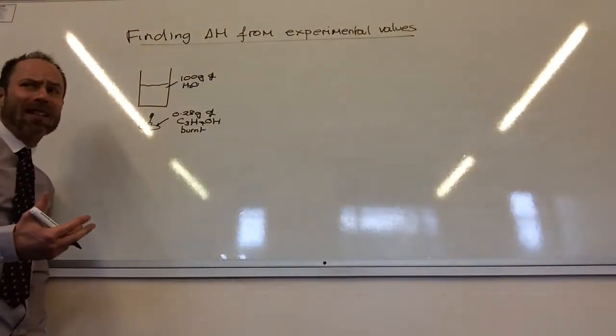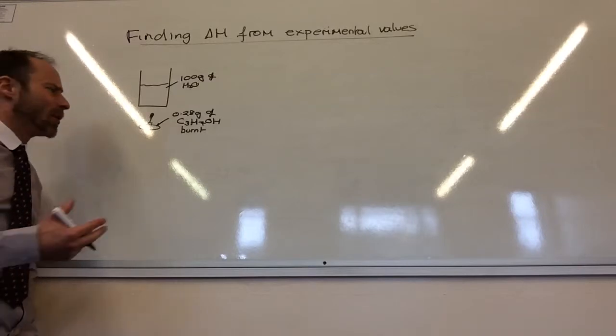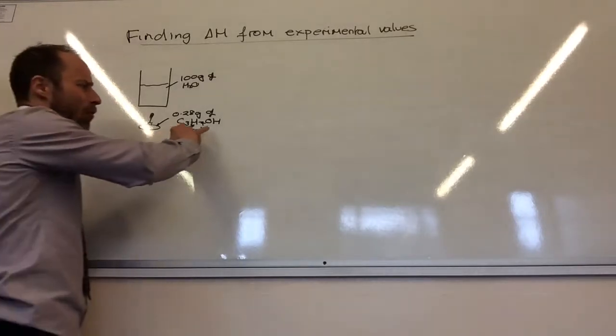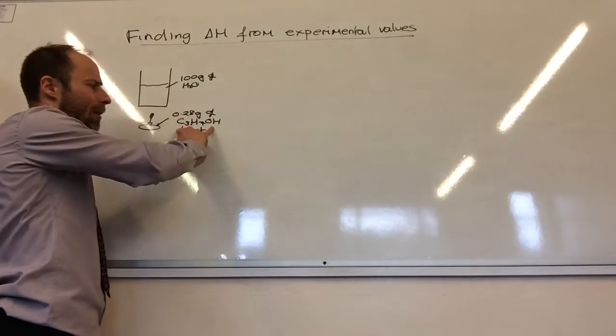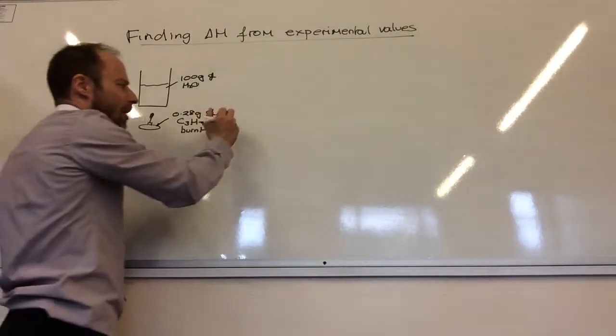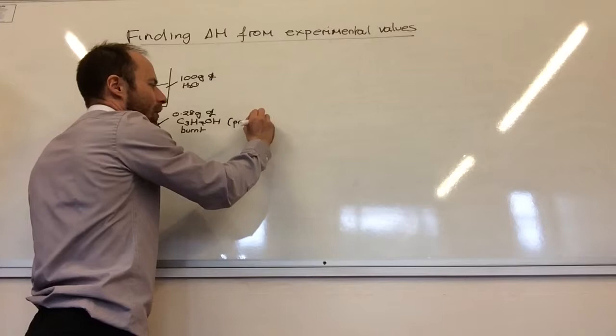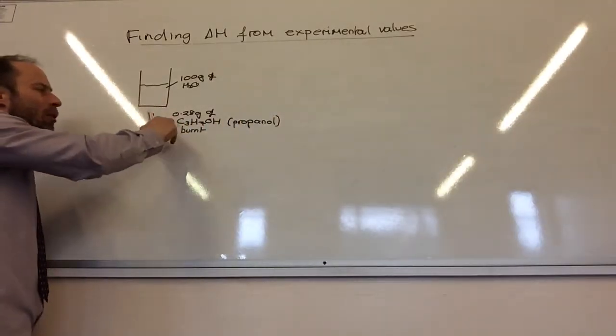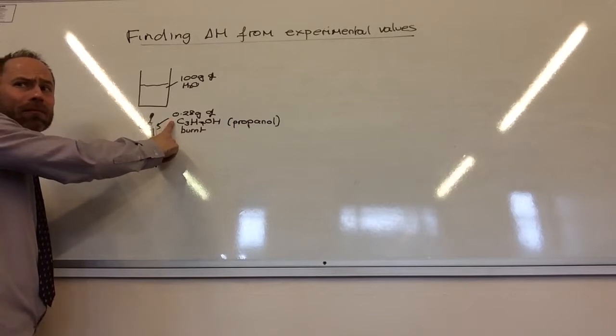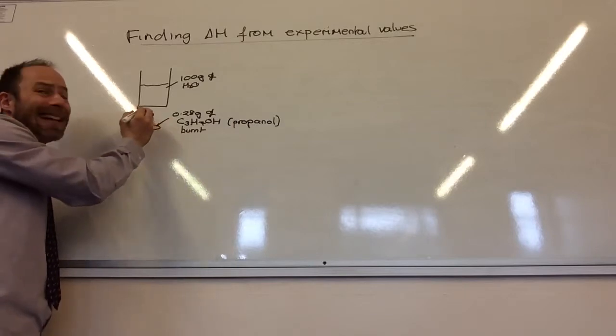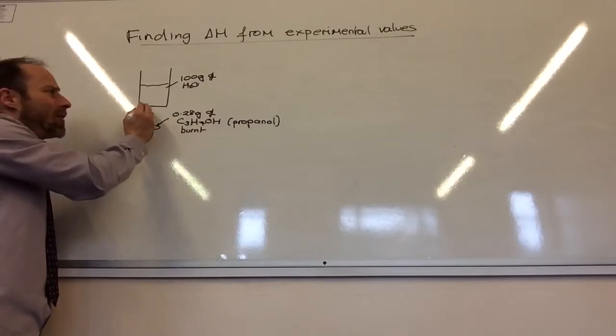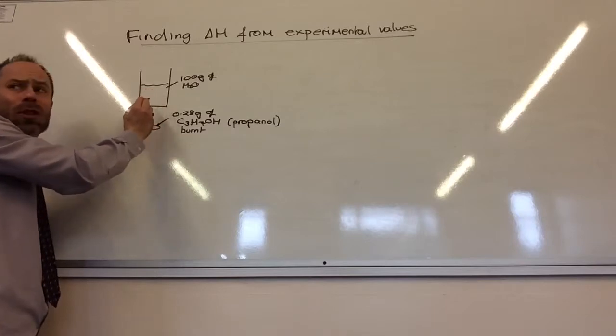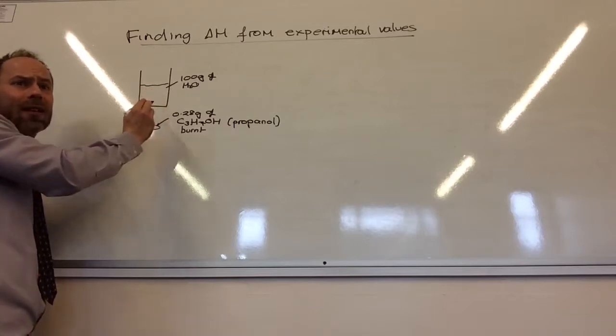We can do a very simple experiment, or you can do experiments where you take some propanol, and I put the formula there, but I know you haven't done alcohols yet. We're just going to call that propanol for the moment. And we burn 0.28 grams of it. I light it up. The heat gets transferred into the water, and the water heats up.